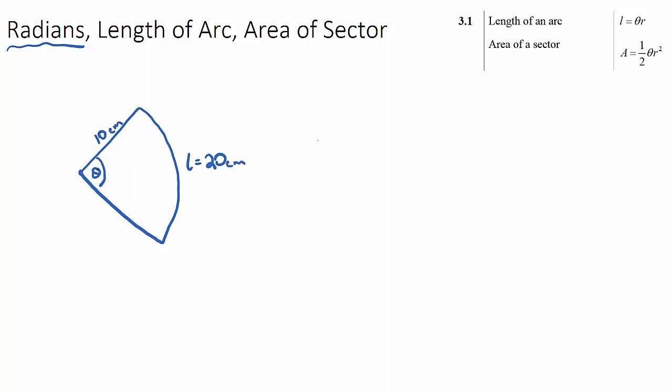We can find out what θ is very quickly in radians, because θ is going to be the arc length divided by the radius. So, θ is just going to be the arc length over the radius, which will be 20 over 10, which is 2.